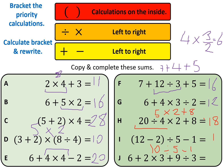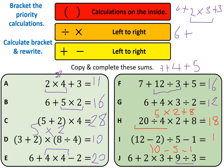The last one is a bit trickier, so let's work it out with more space. Do 9 divided by 3 first — that's 3. So we have 6 plus 2 lots of 3, add 3. That gives 6 plus 6 plus 3, and the final answer is 15. Check your answers on the next slide.